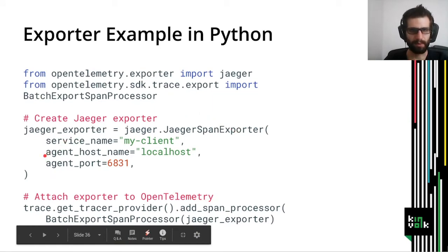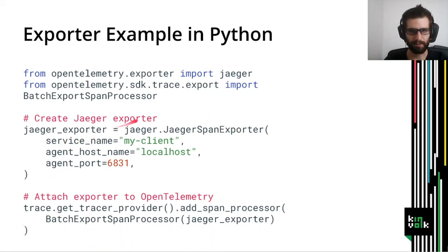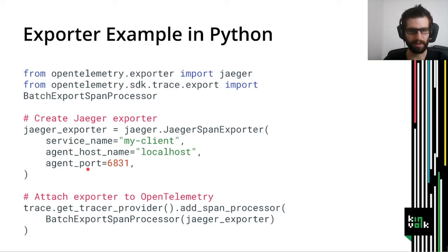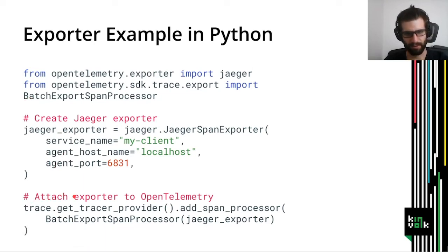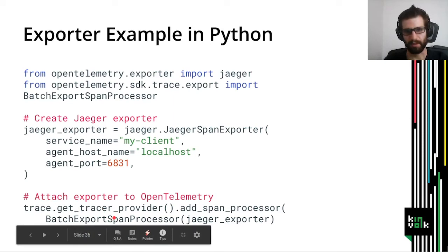Here is an example in Python of how to use the Jaeger exporter. We import the Jaeger exporter and some glue code called SpanProcessor. We create an instance of the Jaeger exporter — we only need to pass a service name, a hostname, and the port where the agent is running. If you are using a paid service, you will probably also have to pass a token. Then we connect it to OpenTelemetry using the SpanProcessor.